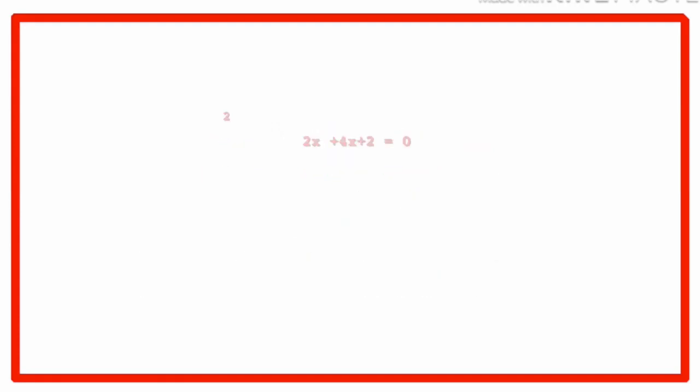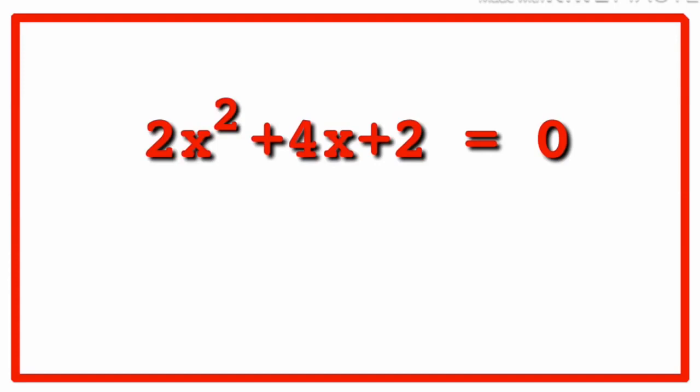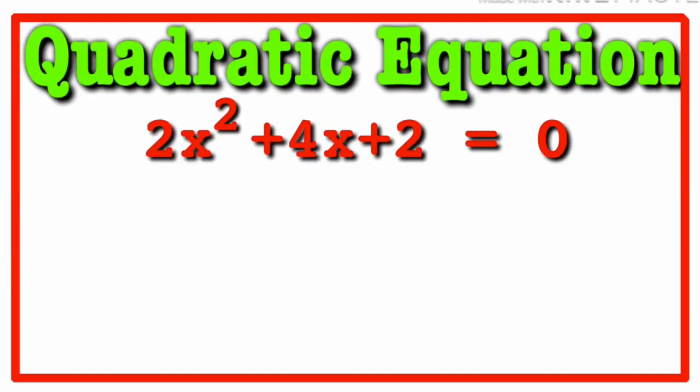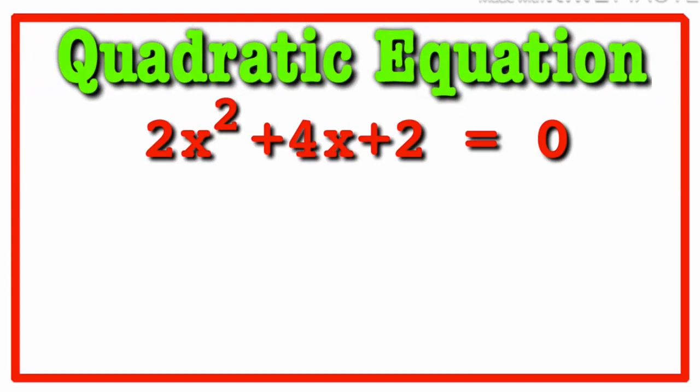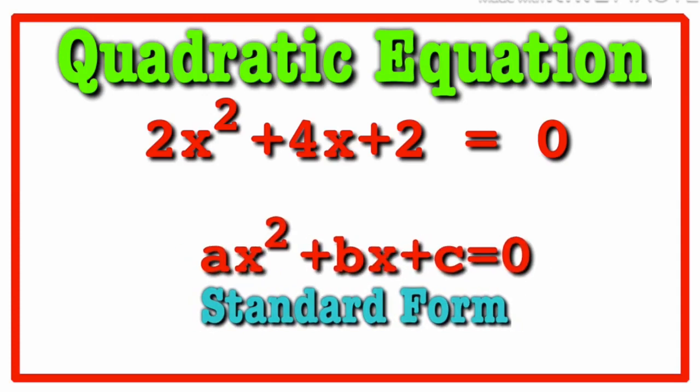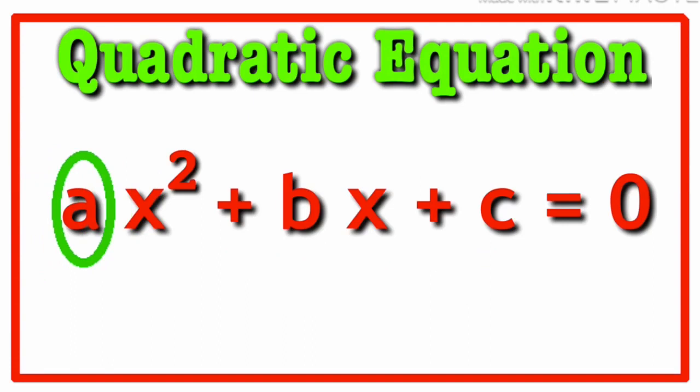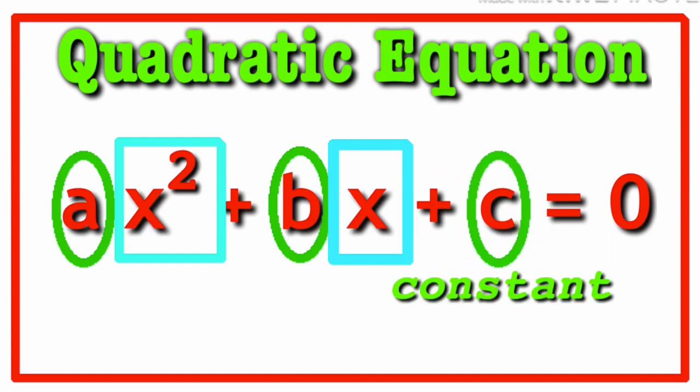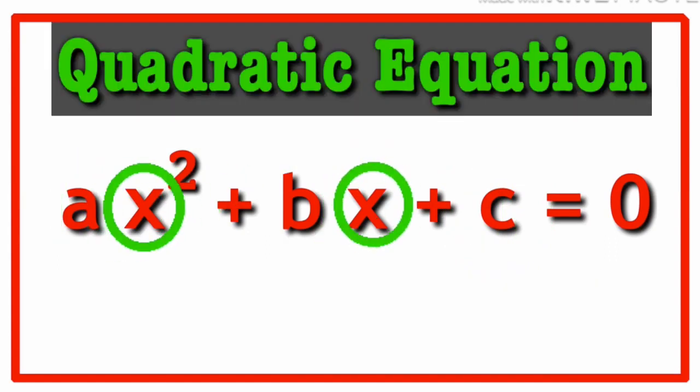For instance, 2x squared plus 4x plus 2 equal to zero is a quadratic equation. Comparing it to the standard form ax squared plus bx plus c equal to zero we got a as 2, b as 4, and c as 2. a is the coefficient of x squared, b is the coefficient of x while c is the constant. This is called a quadratic equation in variable x.